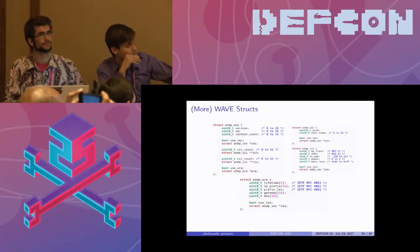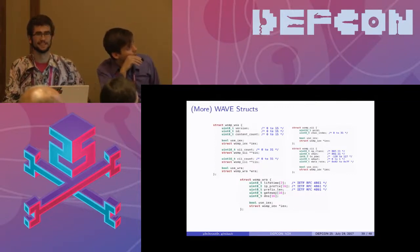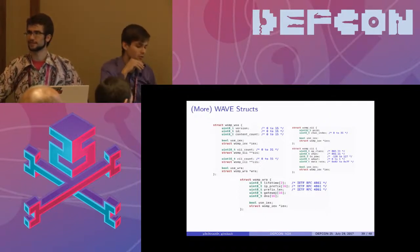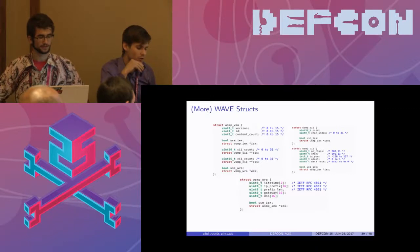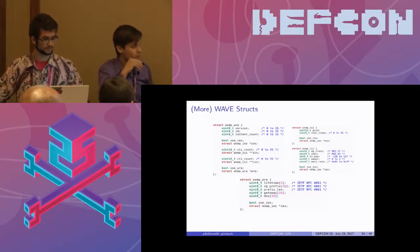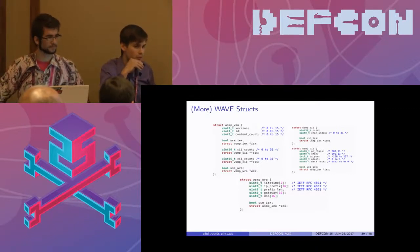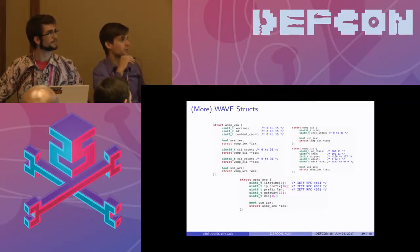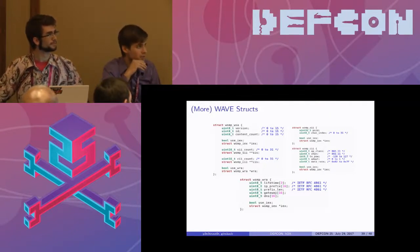Here are the ancillary structs that are filled in — the routing advertisement, service advertisements, and the channel information and service information. These encode more particular information for the advanced functions provided in the higher layer services built on top of this.